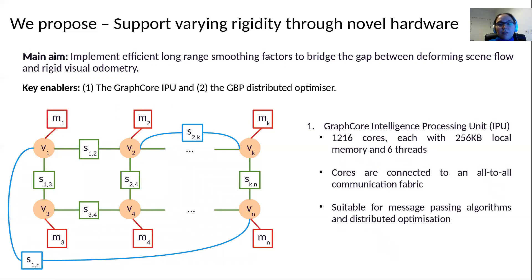The GraphCore IPU is massively parallel. It consists of 1216 cores, each with local memory and a number of threads. Importantly, the cores are connected to an ultra-fast auto-communication fabric which enables them to send data between each other. This makes it suitable for message passing type algorithms and distributed optimization on graphs of arbitrary configurations.